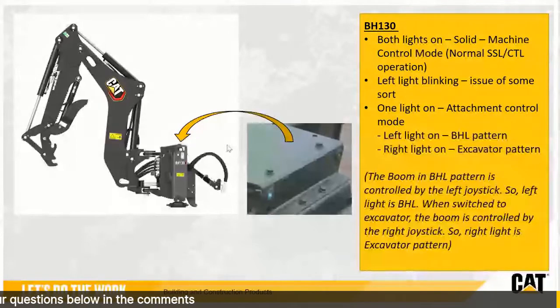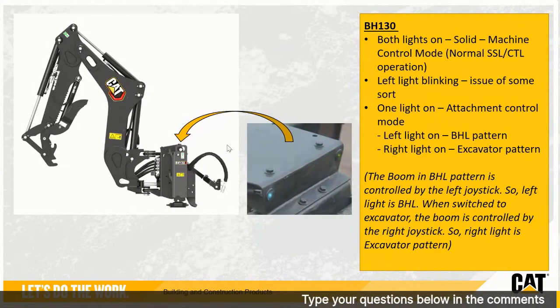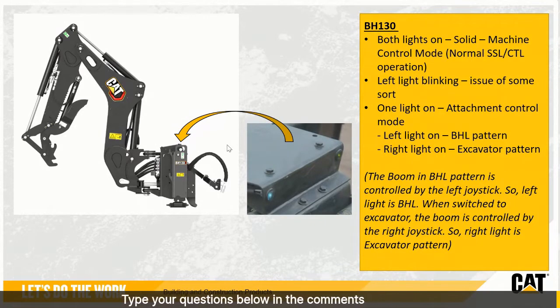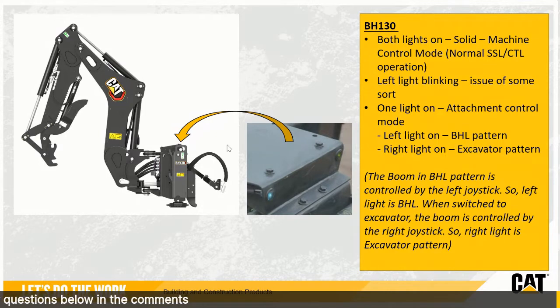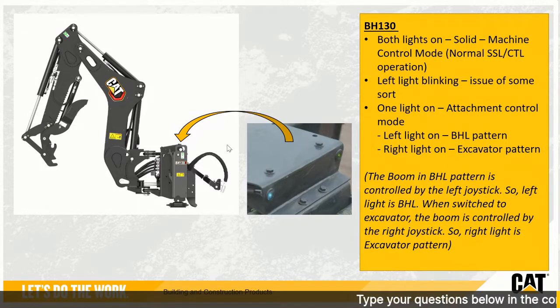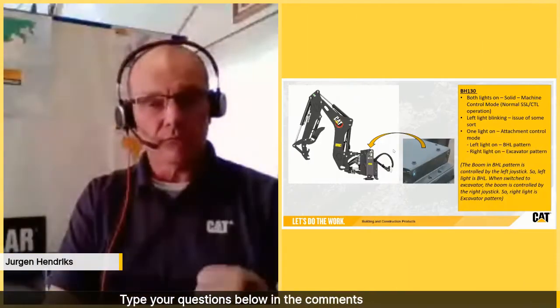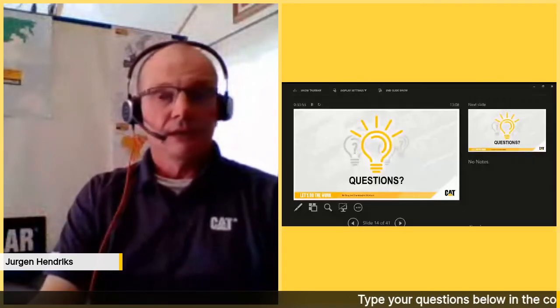Another advantage of the backhoe — and indeed every smart tool — is that you'll find two indicator lights on the back side, visible to the machine operator. Both lights on solid means you are in machine control mode. If the left light is blinking, there is an issue; you can find details in the manual. If one light is on solid, you are in attachment control mode: left light on means backhoe loader pattern, right light on means excavator pattern. So the backhoe loader boom is controlled from the left side, and the excavator boom from the right side.